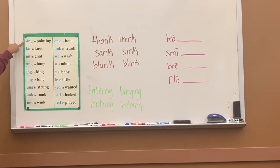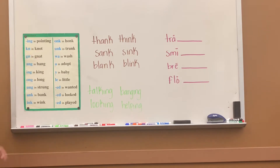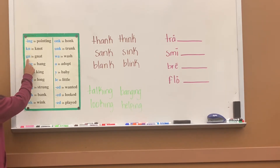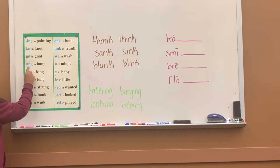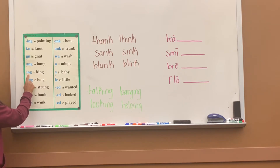ING says 'ing' as in pointing. KN says 'n' as in knot. GN says 'n' as in gnat. A-N-G says 'ang' as in bang. I-N-G says 'ing' as in king.